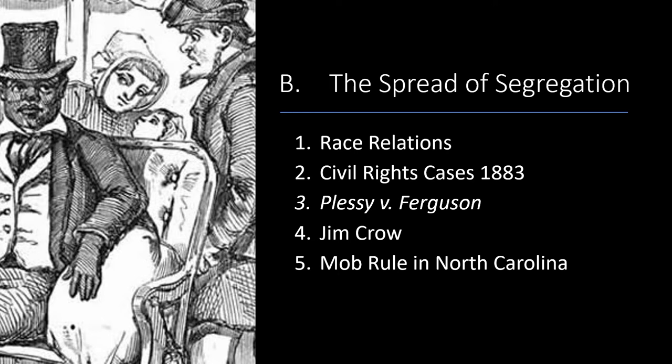Jim Crow laws spread throughout the Southern states, and racial stereotypes and tensions only grew more pronounced. In Wilmington, North Carolina, African Americans composed the majority of the 20,000 city residents. In 1894 and 1896, they joined with Republicans and populists to elect their own slate of officials — a step that the minority white Democrats found unacceptable. On November 10, 1898, more than 2,000 white men and boys rampaged through the town, destroying African American-owned businesses, killing as many as 100 African Americans, and forcing elected officials out of office while appointing their own slate.